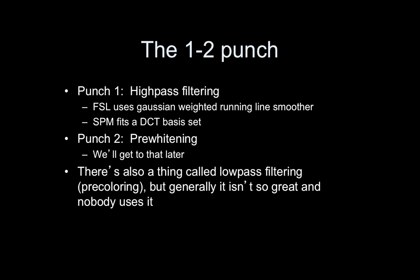Referring back to the 1-2 punch mentioned before: we basically apply two things to remove the low-frequency drift illustrated in fMRI or BOLD time series. The first punch is high-pass filtering. FSL uses a Gaussian-weighted running line smoother, whereas SPM and AFNI use a discrete cosine transform (DCT) basis set. So SPM is basically adding regressors to the model, and FSL is basically changing the data.